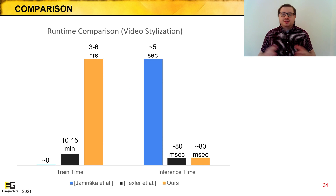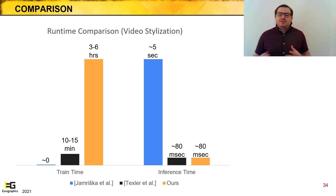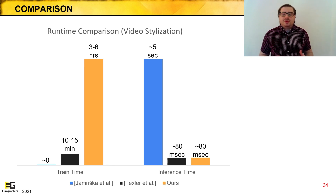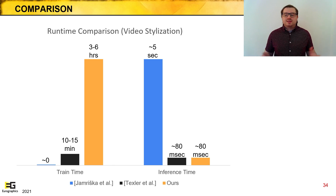Finally, we can look at the comparison of the runtimes of our compared methods — all times refer to running time on a single V100 NVIDIA GPU. While Yamrishka doesn't require any pre-training, each frame takes roughly 5 seconds to synthesize. Texler et al. trained their network in several minutes, typically taking at least 10 to 15 minutes to obtain a reasonable result, and running inference takes about 80 milliseconds, which translates to about 12 FPS on this kind of GPU. Because the gram matrix style loss is slow to converge, our training schedule takes up to several hours to converge. However, once the model is trained, inference runs exactly as fast as Texler's due to shared use of the same neural network architecture.